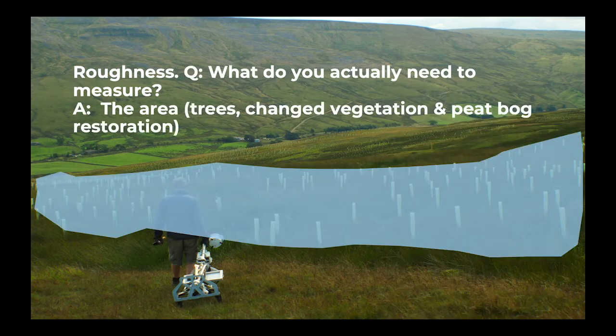All we can actually do is measure the area of trees planted or changed vegetation — for example, roughening up an area by planting more natural vegetation, or peat bog restoration. One of the questions from the live webinar was: why do we think that peat bog restoration changes roughness? It's to do with the micro-topography — the sphagnum moss creates a very hummocky land surface that creates roughness and slows the flow down.